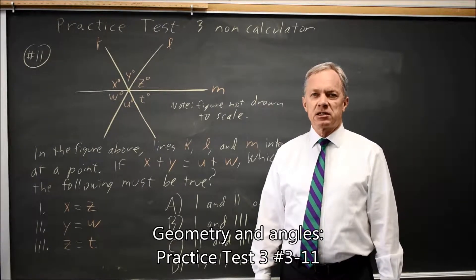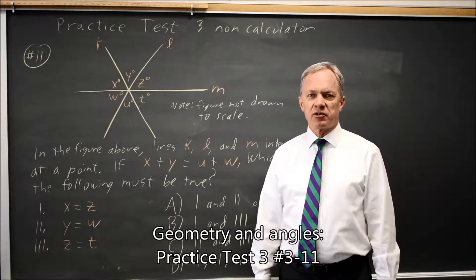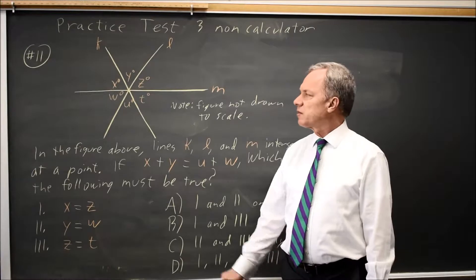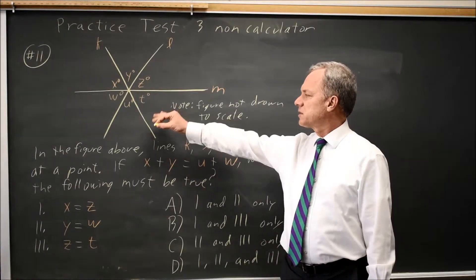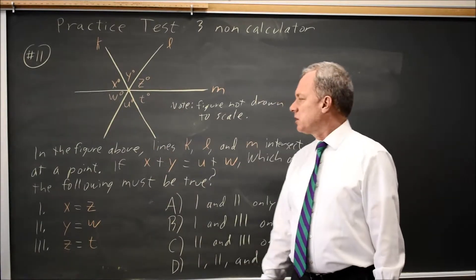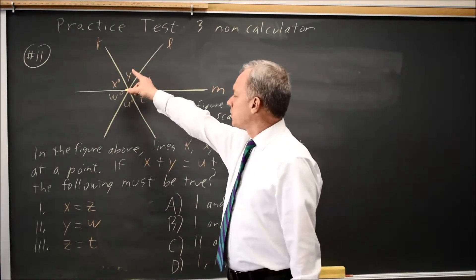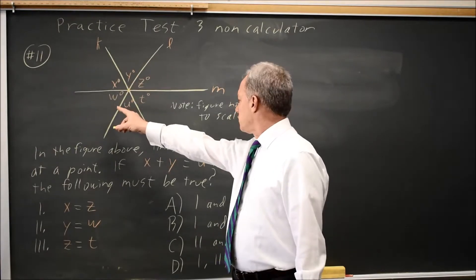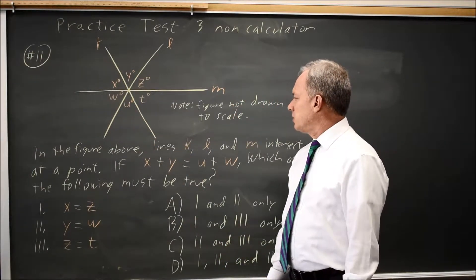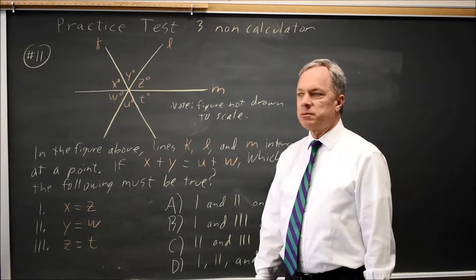This is SAT Test 3, non-calculator, question number 11. College Board gives us a set of three lines intersecting a single point. They tell us that x plus y equals u plus w, and they ask which of these must be true.